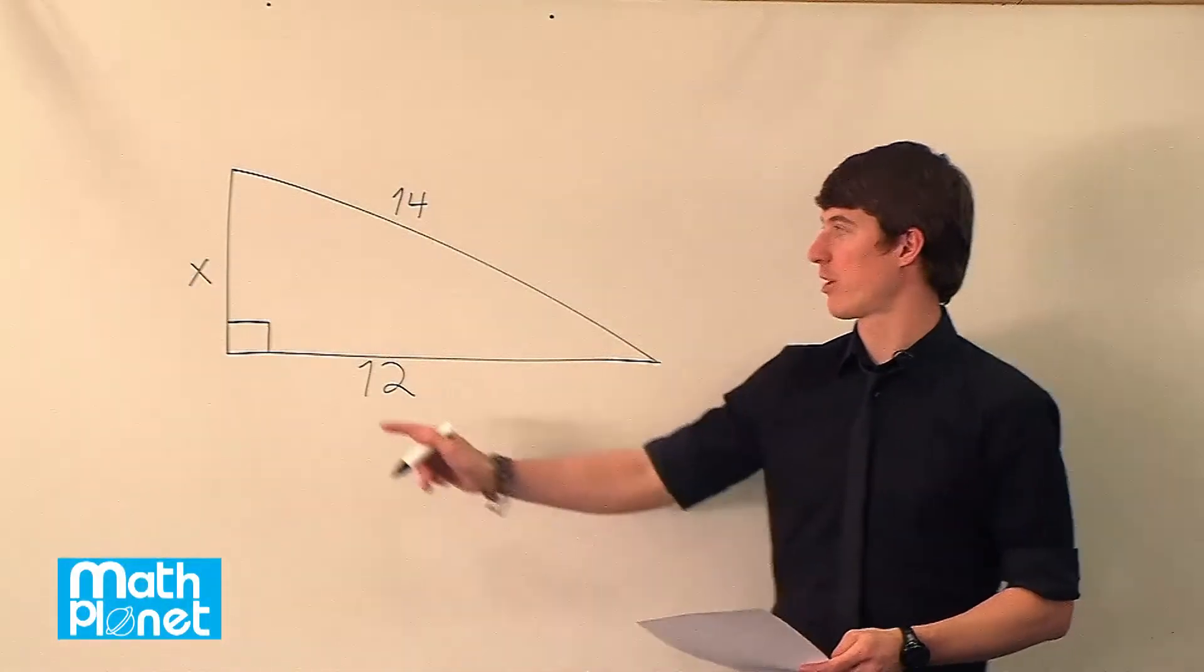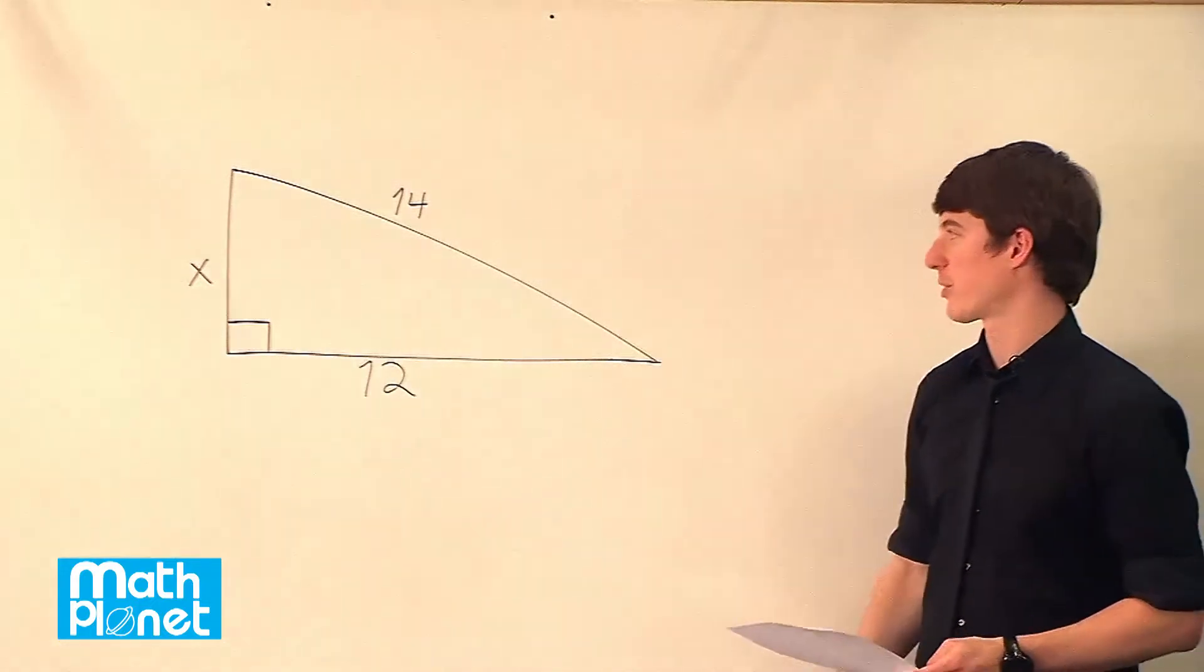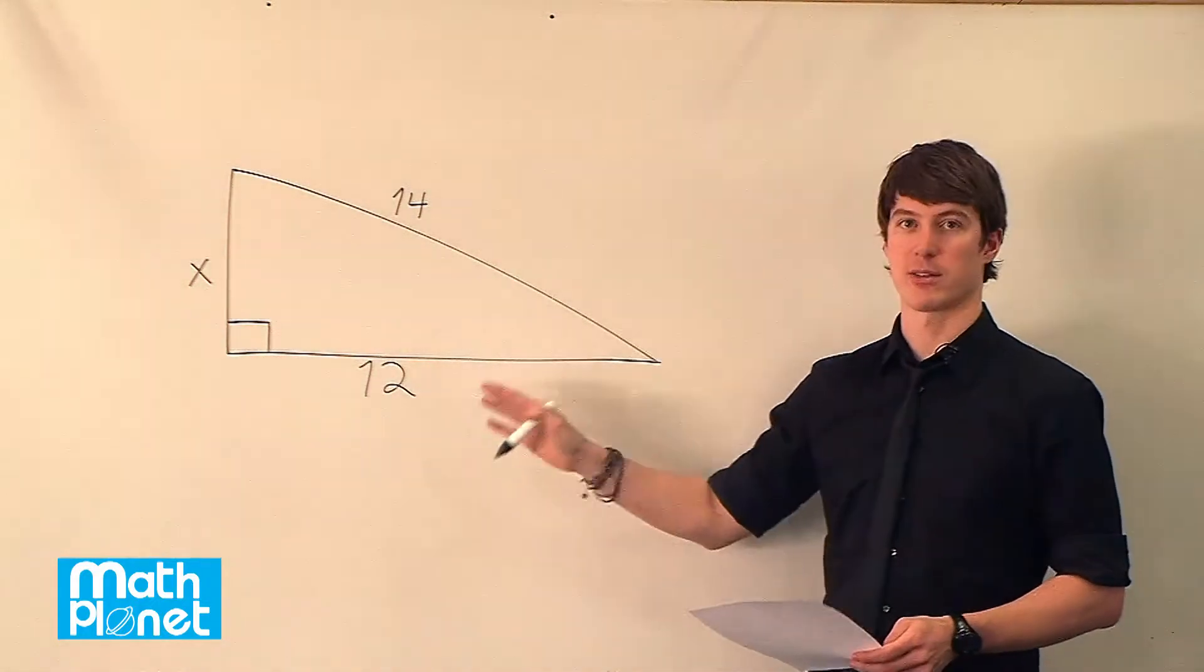Here we have a right triangle, and we want to solve for this unknown side, x. And since it is a right triangle, we can use Pythagoras' theorem and do that accordingly.